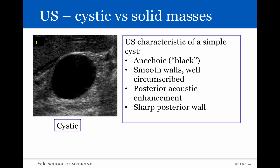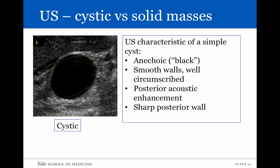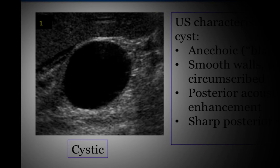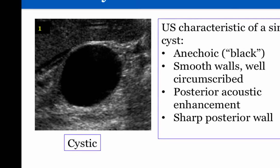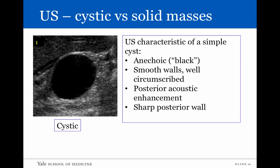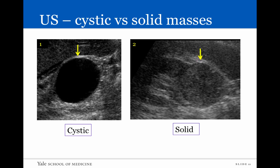Here are the ultrasound characteristics of a simple cyst, which apply to a cyst in any organ. It will be anechoic or black. Its walls will be extremely smooth and well-circumscribed — you can trace them with a pencil. The soft tissues immediately behind the cyst will be brighter than the adjacent soft tissues; this is posterior acoustic enhancement. Because sound waves pass through the cystic structure unperturbed, more signal emerges from behind it compared to adjacent soft tissues where some waves are reflected. The posterior wall will also be extremely sharp.